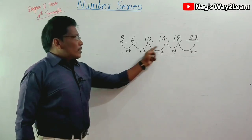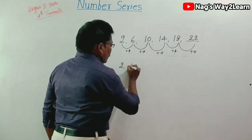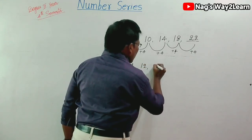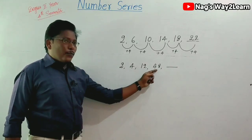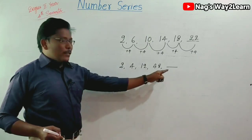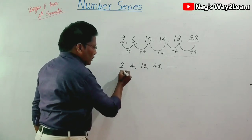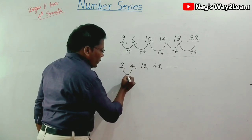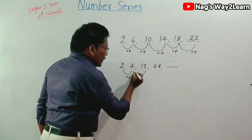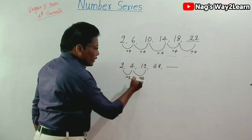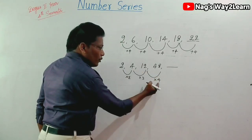One more example: the series is 2, 4, 12, 48, dash. To find the next number, we establish the relationship. 2 becomes 4 — multiply by 2. 4 becomes 12 — multiply by 3. 12 becomes 48 — multiply by 4. So the pattern is ×2, ×3, ×4.